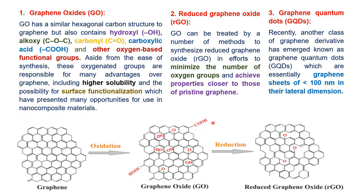These functional groups act as sites for the extraction of metal ions or wastewater treatment — they can extract pollutants from water. They also serve as bridges for the incorporation of other functional groups, which improves the advantages compared to bare graphene.